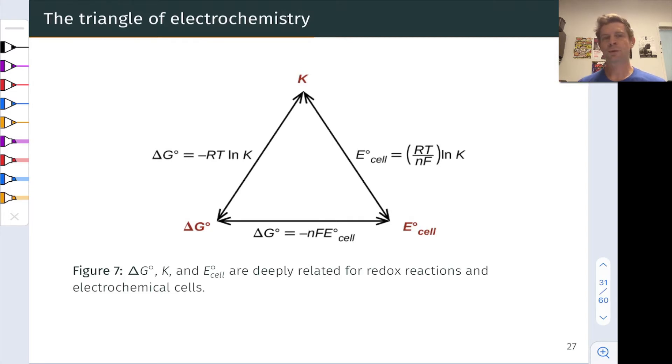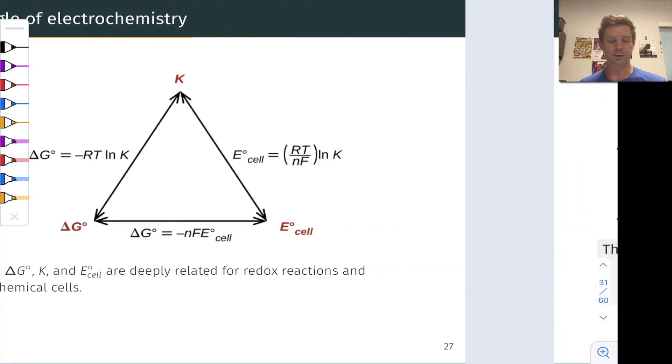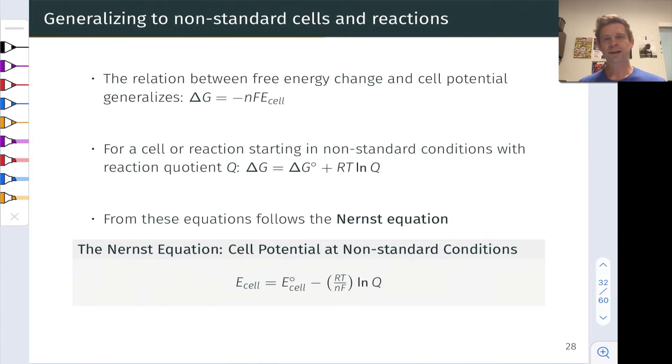What happens when we're looking at a galvanic cell that is not in a standard state, for instance with concentrations that are not all one mole per liter for aqueous species? Well then we need to somehow generalize out these relations to a non-standard galvanic cell and think about what happens when we start in a non-standard state and allow that galvanic cell to proceed to equilibrium.